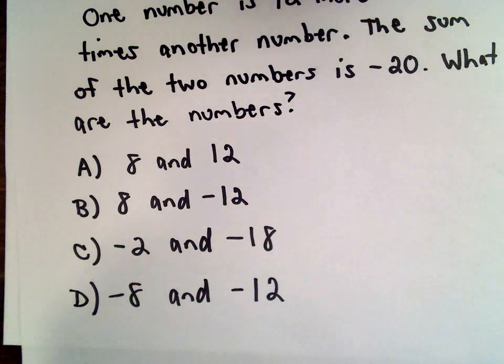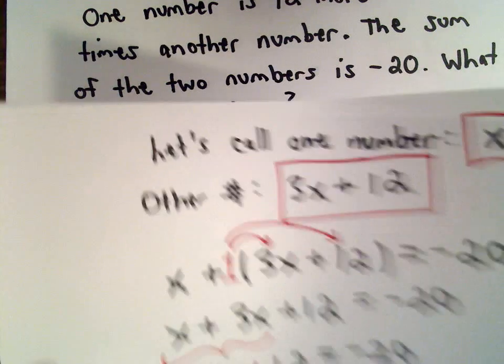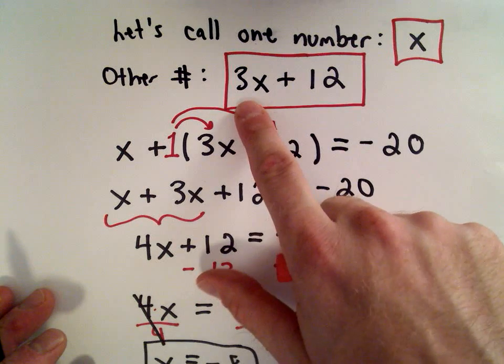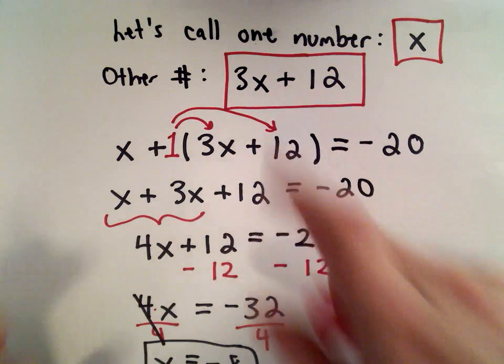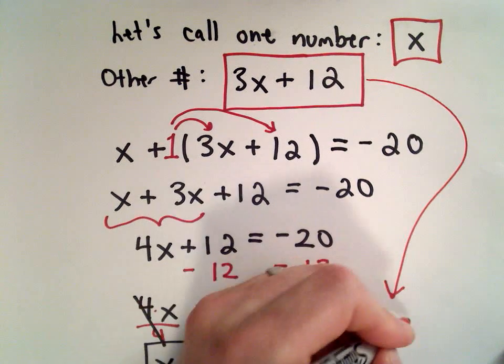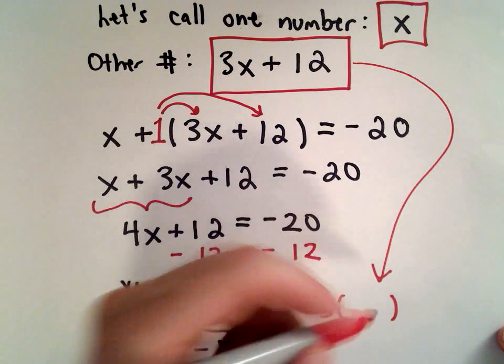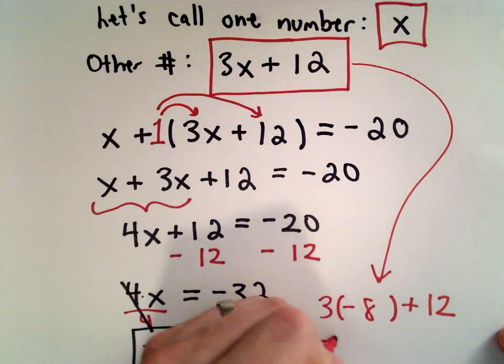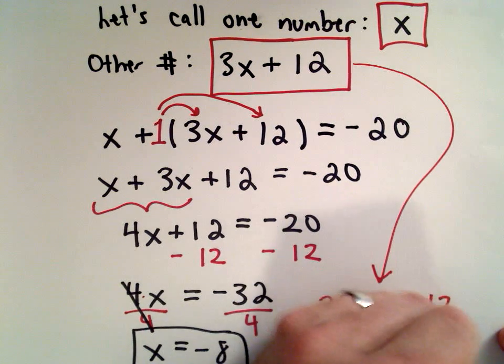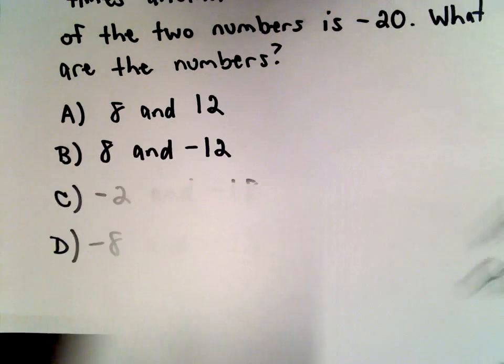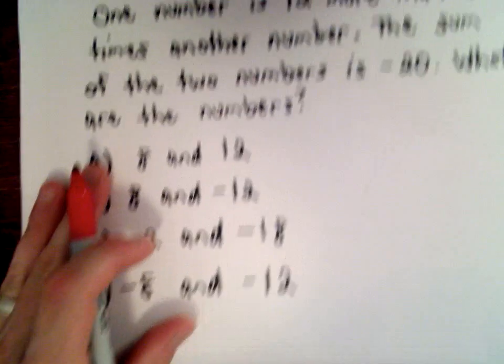Let's be thorough just to make sure. Suppose it was a free response question and we had to figure out the other number. We know one number is negative 8. The other number is 3 multiplied by that number plus 12. So we've got 3 multiplied by x, which is negative 8, plus 12. 3 multiplied by negative 8 is negative 24, plus 12 gives us negative 12. So negative 8 and negative 12 are our solution.